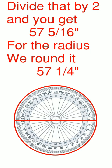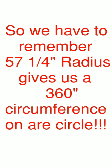If we divide that by 2 you get 57 5/16ths for the radius of that circle and we round it to 57 and a quarter. So we have to remember a 57 and a quarter inch radius gives us a 360 inch circumference on our circle. It's golden.